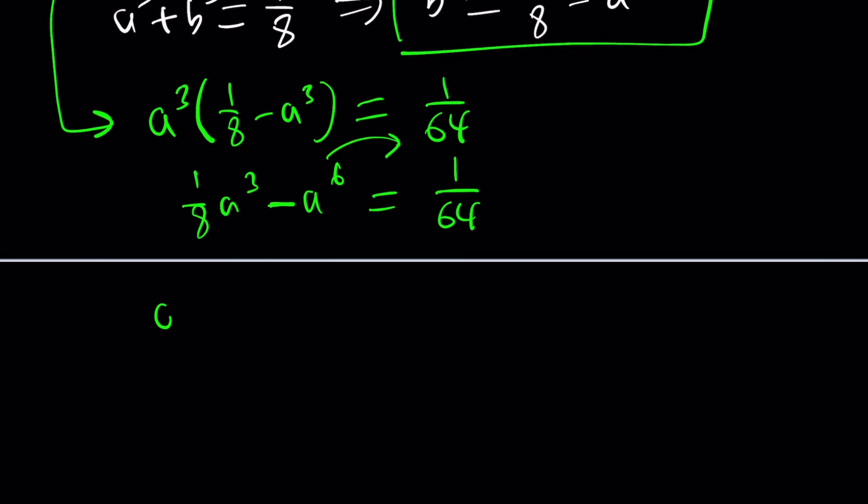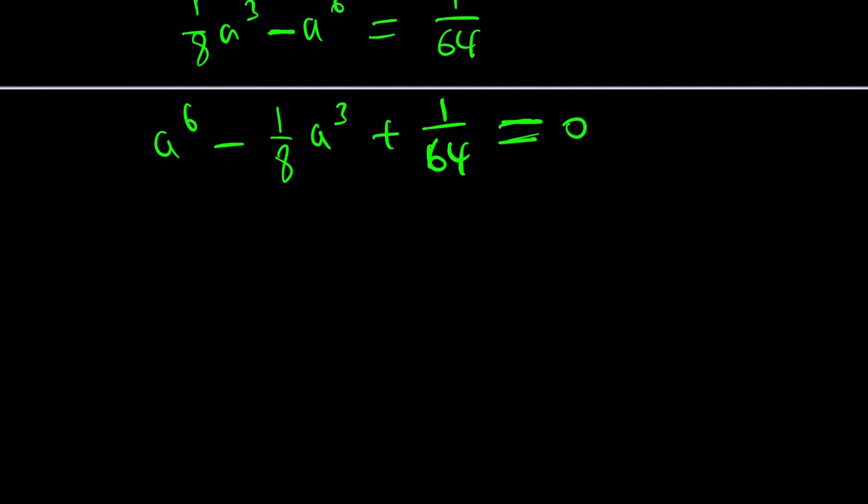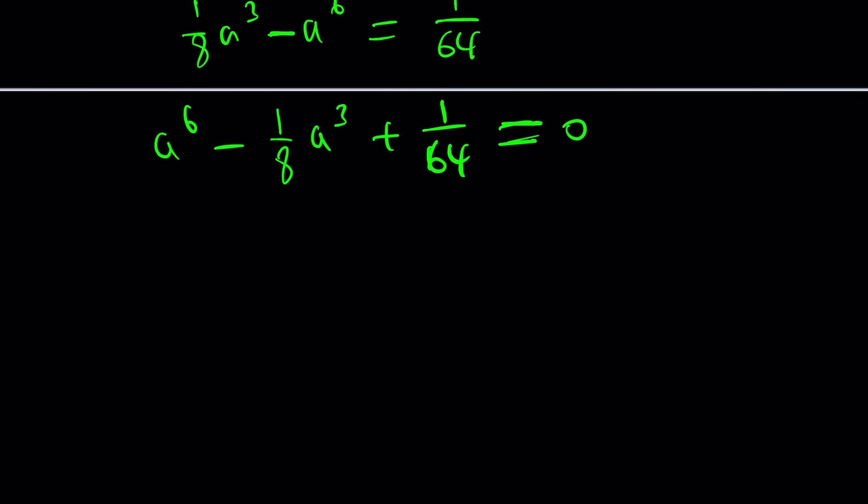a cubed multiplied by b cubed which can be written as 1 over 8 minus a cubed equals 1 over 64. And then when we distribute this we're going to get something like 1 over 8 a cubed minus a to the sixth power equals 1 over 64. Normally I don't show this many steps but you know this time I kind of feel generous. And I'm going to put everything on the right hand side so where a to the sixth is positive. And now this is my complete hexic formula. No there's no hexic formula. There's not even a quintic formula. Can you imagine? It's awesome.